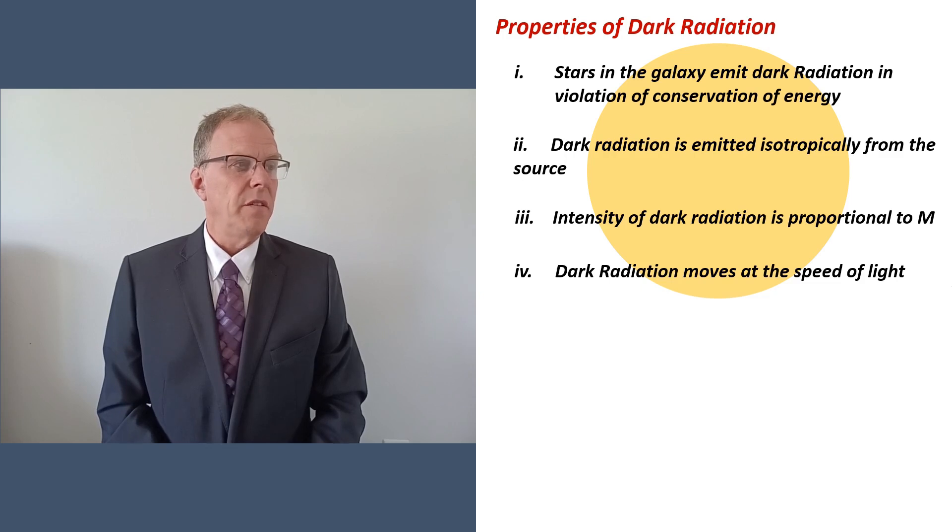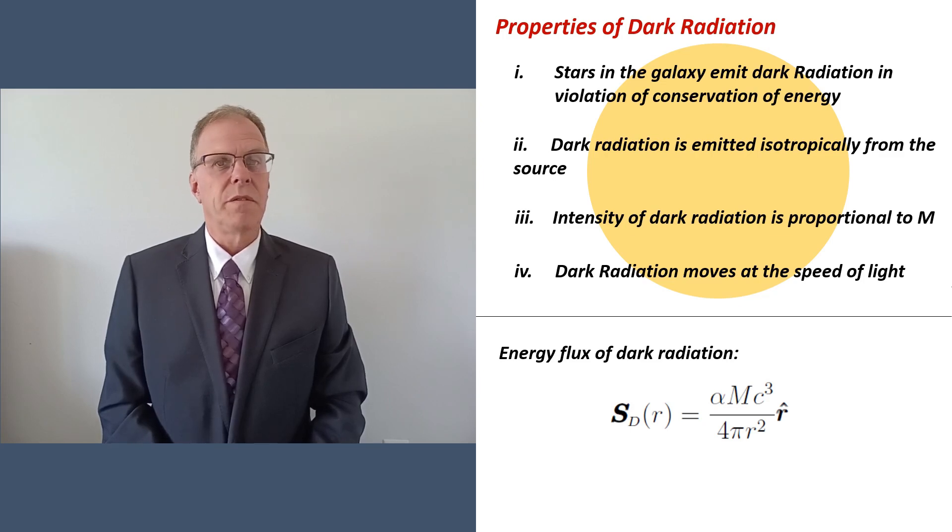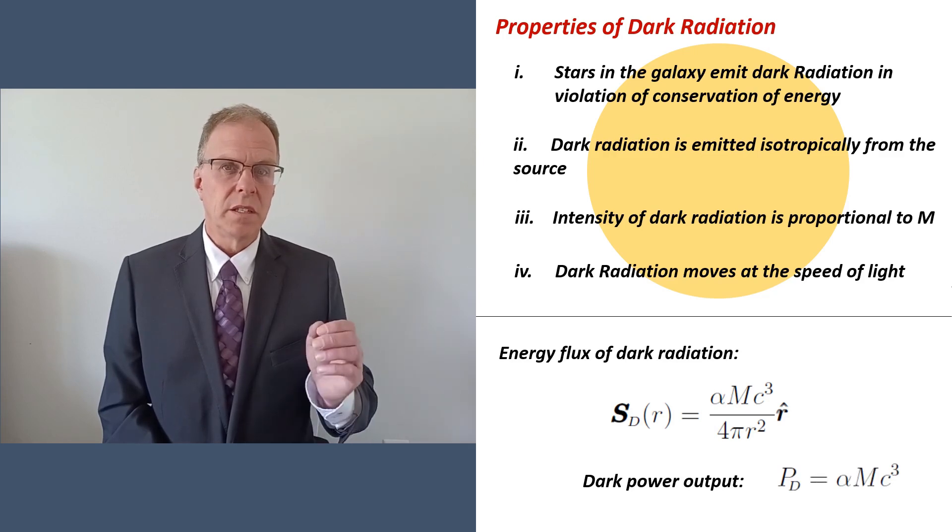With this information a formula for the energy flux is easily constructed and features an unknown constant alpha. A simple flux integral then shows that alpha sets the scale of the dark power output.